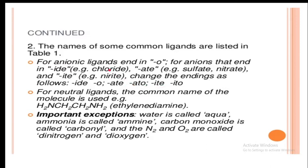For negative ligands, chloride is called chloro. Sulfate and nitrate are also used as ligands. Nitrate and nitrite are called nitrato and nitrito respectively.